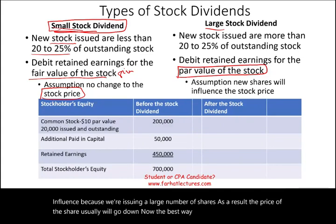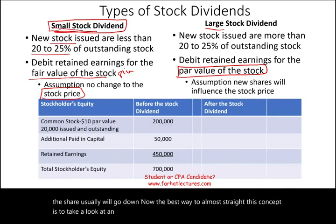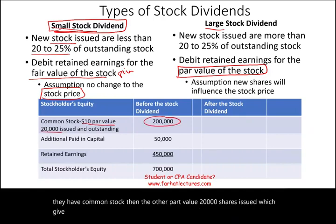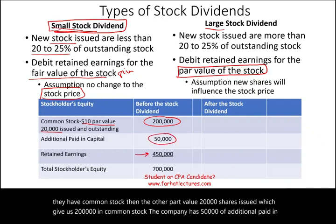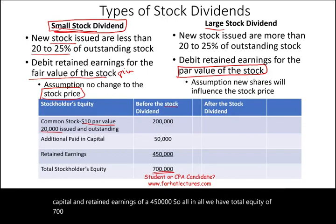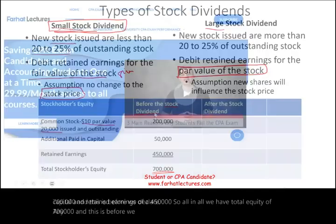The best way to illustrate this concept is to look at an example. Consider a company with common stock at $10 par value, 20,000 shares issued, giving $200,000 in common stock. The company has $50,000 of additional paid-in capital and retained earnings of $450,000. All in all, total equity is $700,000. This is before we declare any stock dividend.